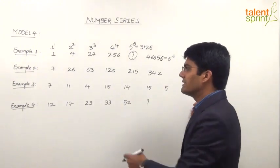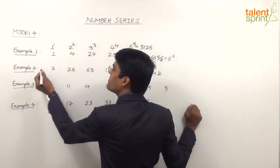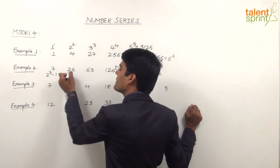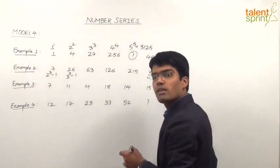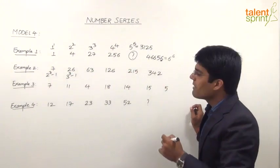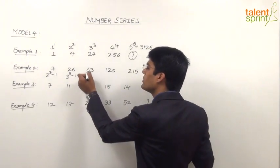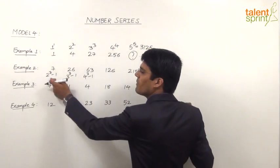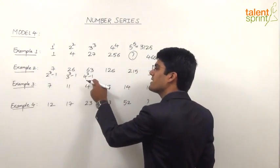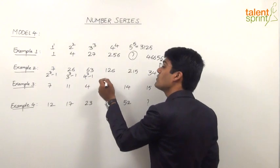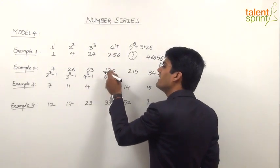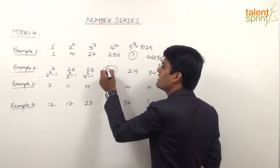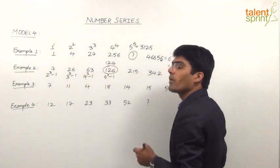If you try to observe properly this 7 here is nothing but 8 minus 1 or 2 cube minus 1. This is like 27 minus 1 which can be taken as 3 cube minus 1. Likewise this is 4 cube 64 minus 1, which is 63. So the probable pattern here is 2 cube minus 1, 3 cube minus 1, 4 cube minus 1 and so on. Next one has to be 5 cube minus 1 but here it is 126. 5 cube minus 1 is 124. So maybe this is the wrong number.